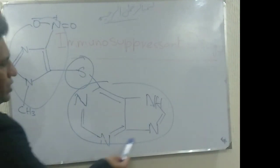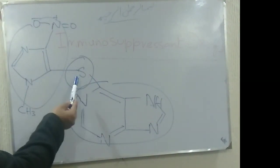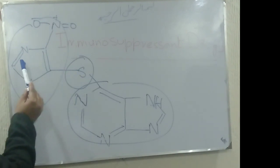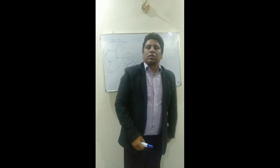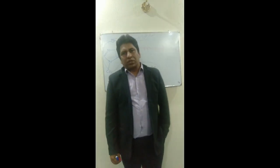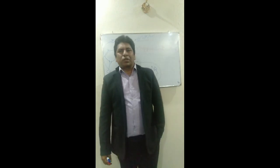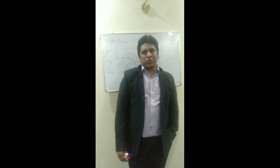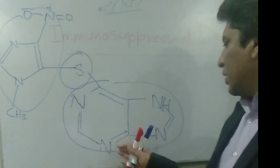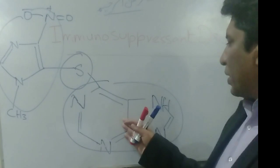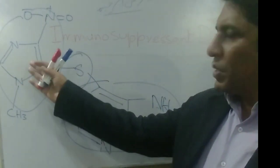In the structure of azathioprine, the purine ring is linked to the imidazole ring through a thioether linkage. That is the imidazole ring, that is the purine, and that is the thioether linkage. Azathioprine is an immunosuppressant drug used in organ transplantation and autoimmune diseases. It belongs to the chemical class of purine analogs, featuring a thioether linkage and a heterocyclic imidazole ring.